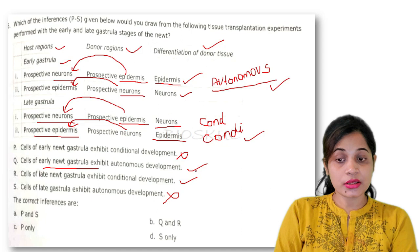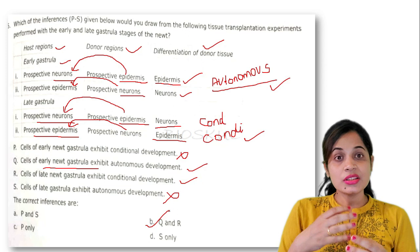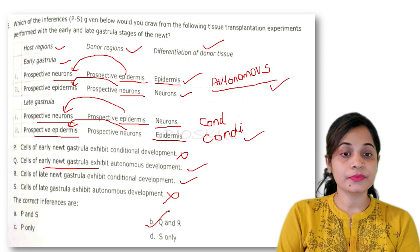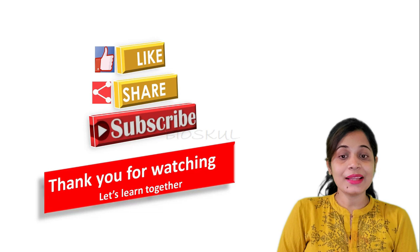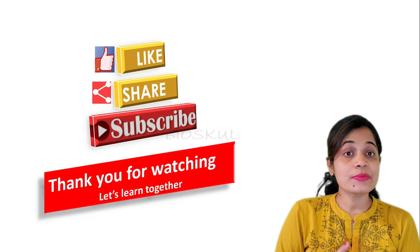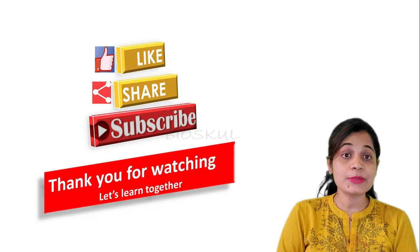The correct answer is Q and R, that is option B. Sometimes the question is modified to confuse us, so be careful while answering. Hope you enjoyed this video. If you like it, please share and subscribe. The next video is very important — it covers the organizer and mechanism of amphibian axis formation. Thank you, bye-bye.